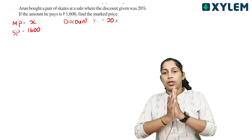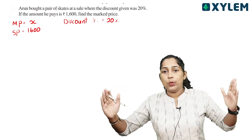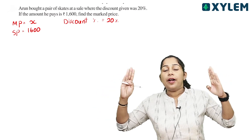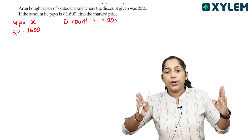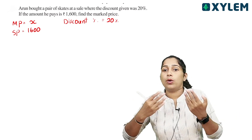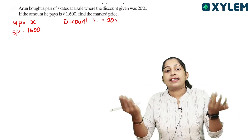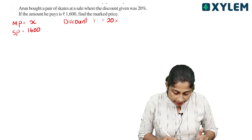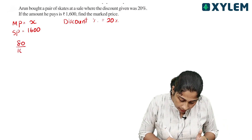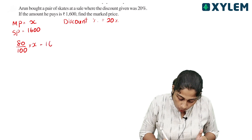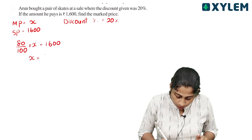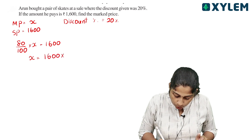The marked price is 100%. A 20% reduction means 80% remains. So 80% of the marked price equals 1,600. Let the marked price be X. Then 80% of X equals 1,600, so X is equal to 1,600 × 100 divided by 80.